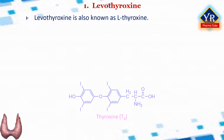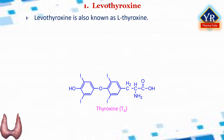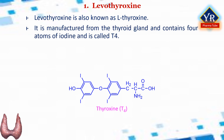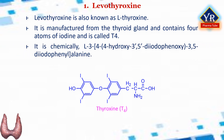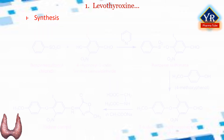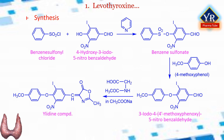Coming to the individual drugs: levothyroxine. Levothyroxine is also known as L-thyroxine. It is manufactured from the thyroid gland, contains 4 atoms of iodine, and is called T4. It is chemically L-3,4-(4-hydroxy-3,5-diiodophenoxy)-3,5-diiodophenylalanine.